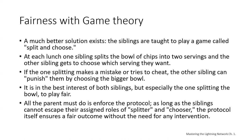There is a better solution: a game called Split and Choose. At each lunch, one sibling splits the bowl of chips into two servings, and the other child gets to choose which serving they want. Almost immediately, the siblings figure out the dynamic. If the one splitting makes a mistake or tries to cheat, the other sibling can punish them by choosing the bigger bowl. It is in the best interest of both siblings — especially the one splitting — to play fair. Only the cheater loses. The parent doesn't have to use their own authority or enforce fairness. All the parent has to do is enforce the protocol. As long as the siblings cannot escape their assigned roles of splitter and chooser, the protocol itself ensures a fair outcome without any need for parental intervention.